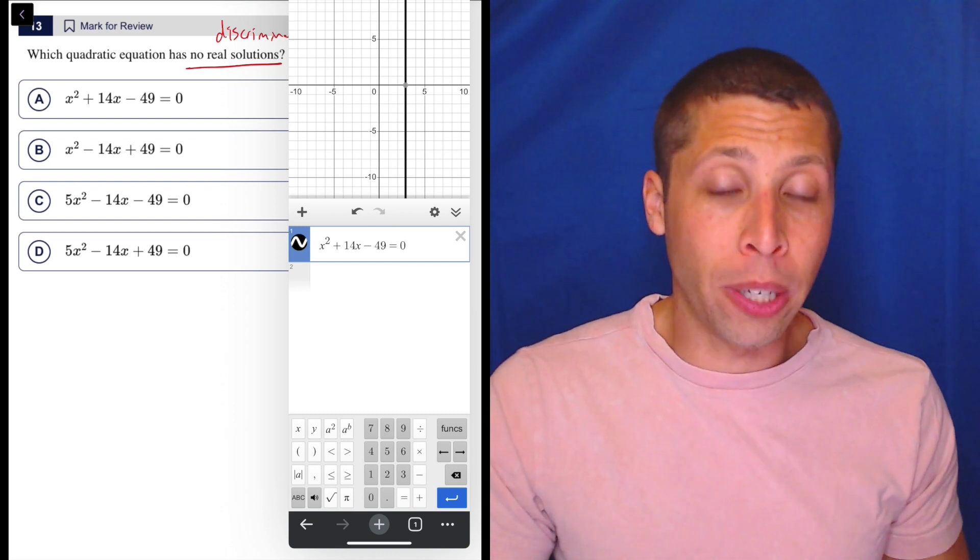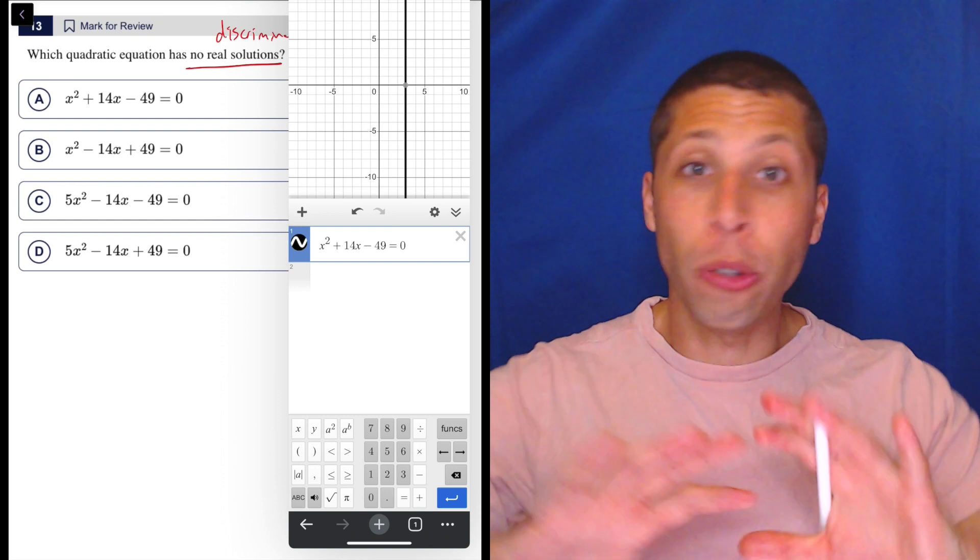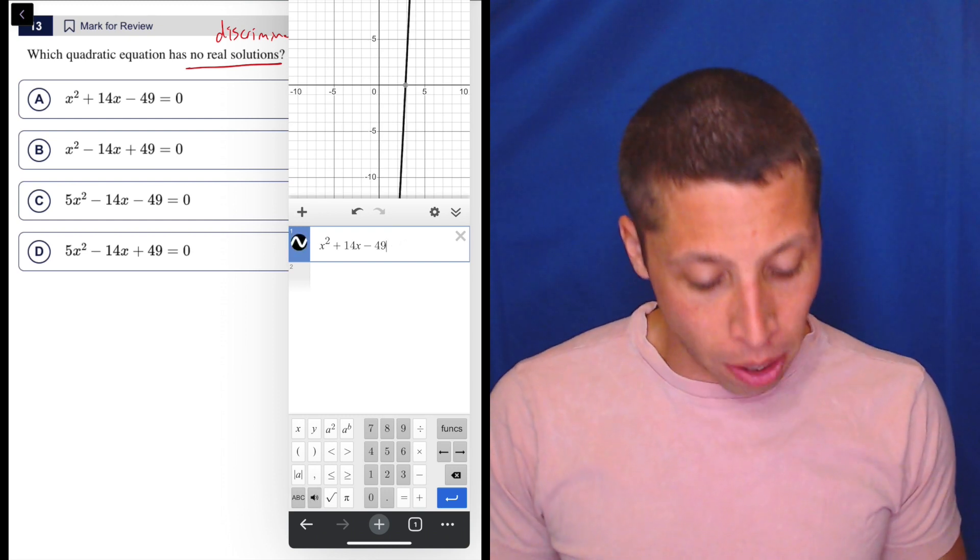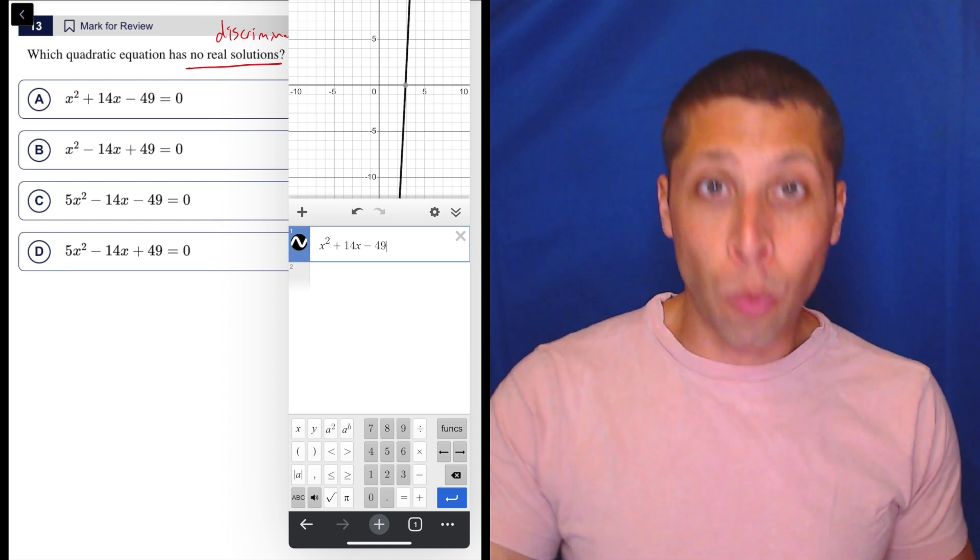So already I can tell this one has some solution because I see a line, but what I would probably do here to make sure that there's no solutions kind of off screen is I would drop the zero.